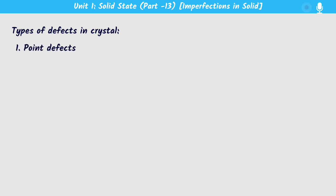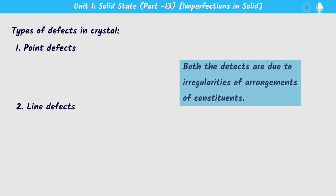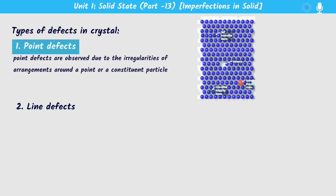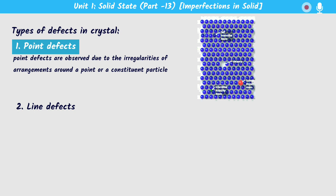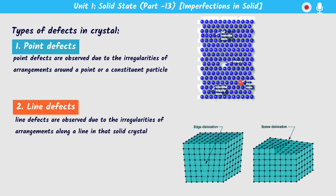The defects in a crystal, known as crystal defects, are classified mainly into two classes. The first is known as point defects and the second is known as line defects. In case of point defects, the defect occurs because of irregularities or deviations from the ideal arrangement around a point or an atom, that means around a constituent particle.